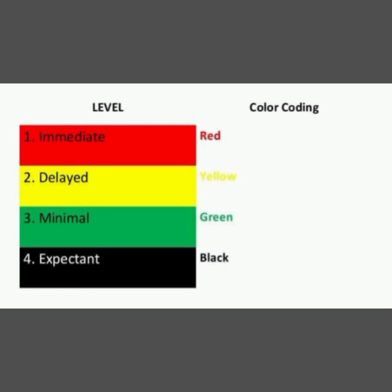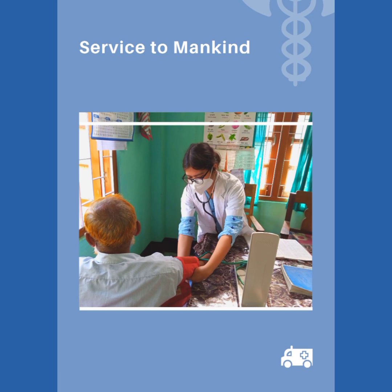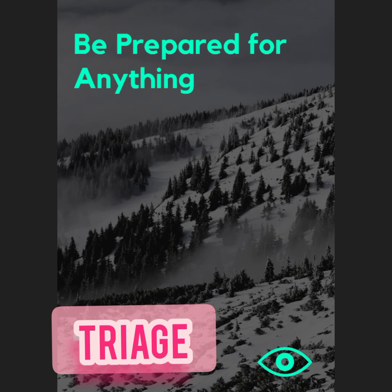The last color code is black. For the expectant condition, where patients are unresponsive and have high spinal cord injury, patients are at risk of death. In these conditions, black color code is given. Hope you all got a brief idea regarding triage, its categories, and the different color codes.